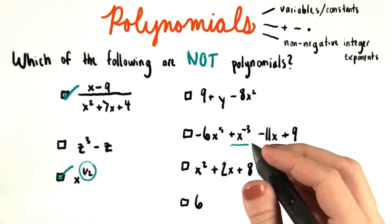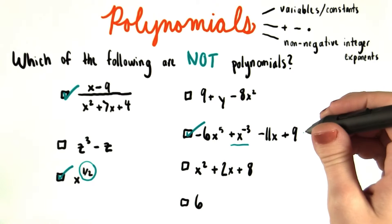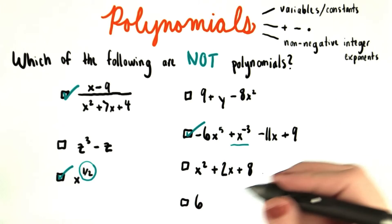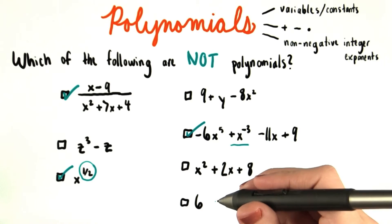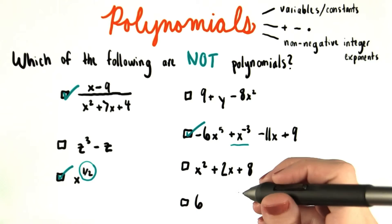So that means this expression is not a polynomial. It may seem a little bit funny that 6 counts as a polynomial. We don't often talk about numbers or variables on their own as polynomials,